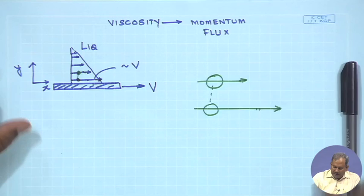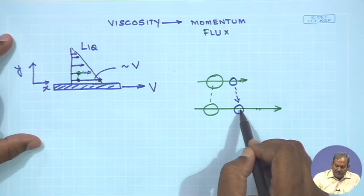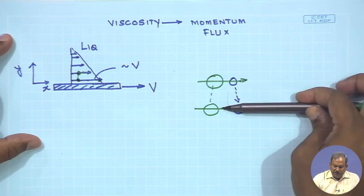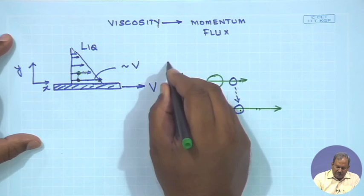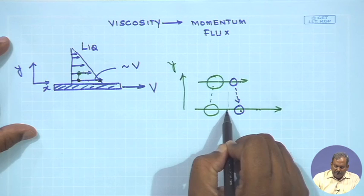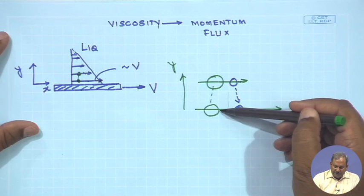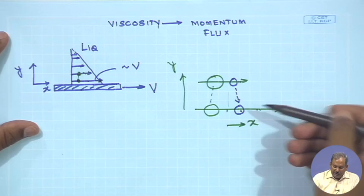Conversely, when a molecule from the upper layer comes to the lower layer, its tendency is to slow the faster-moving lower layer. So there is always interaction between layers as a function of distance y from the solid plate. This invisible 'string' binding two layers moving at different velocities is called viscosity. The origin of viscosity is molecular in nature, and the result is essentially the transport of x-momentum in the y-direction.